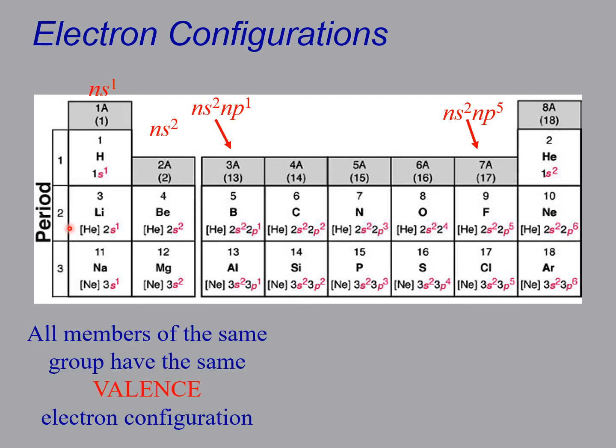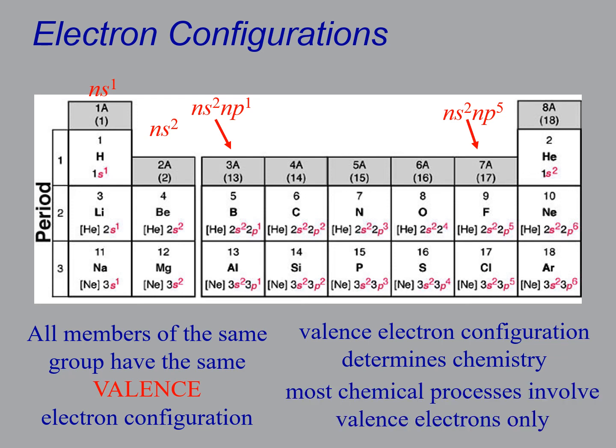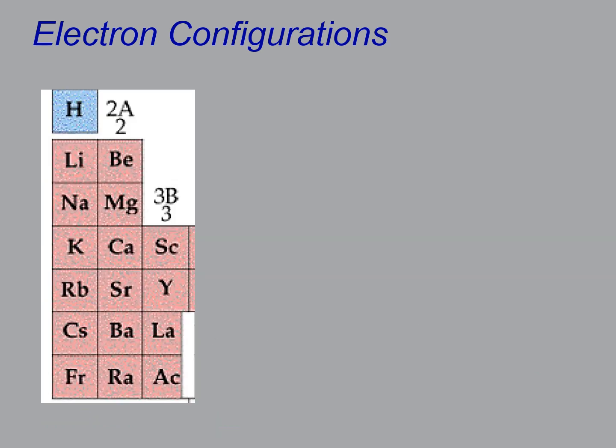And this is important because, as I alluded to earlier, this is actually what determines the chemistry for these guys. And that's because most chemical processes involve just the shifting of the valence electrons. The core electrons are sufficiently deep inside that they don't really do much, or they don't exchange very much with other atoms.